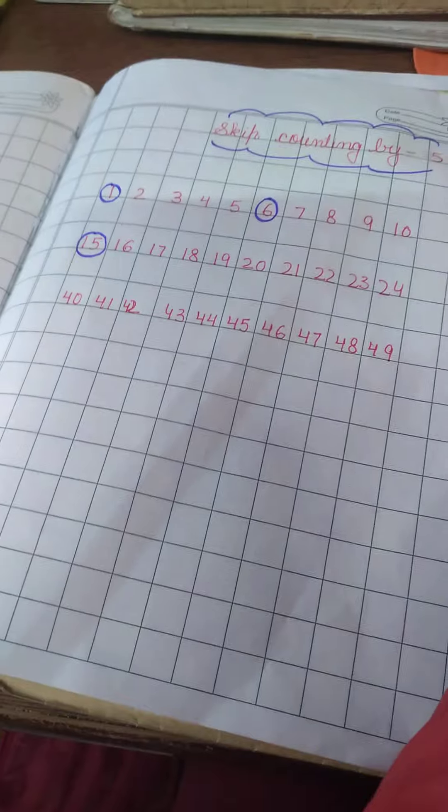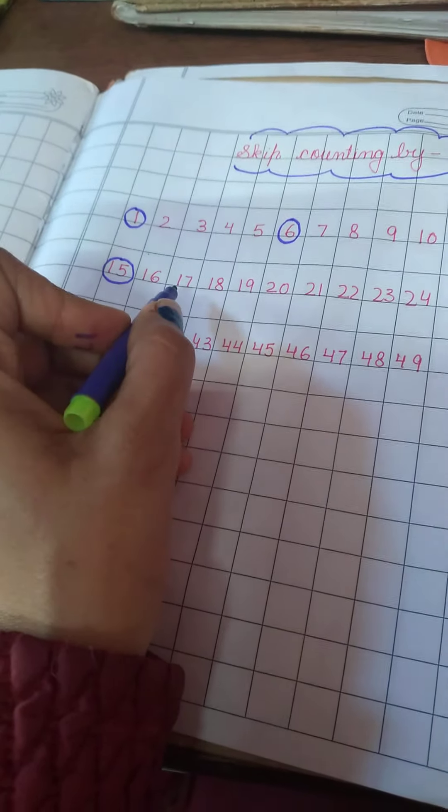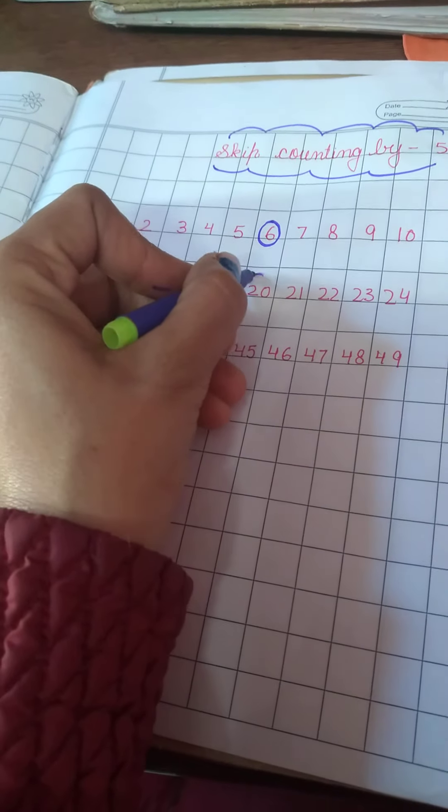Now circle the fifth number. This is five, one, six. First, second, third, fourth, fifth number. And that is 20.